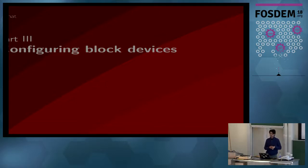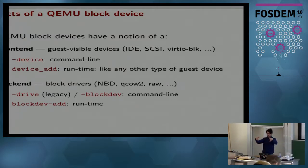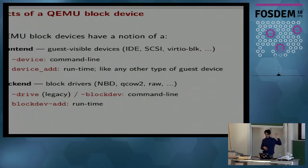In this part, we'll quickly see how block devices are configured in QEMU. QEMU's block device has a notion of a back-end and a front-end, where the back-end lets you configure a block device and set up various things like cache options, formats, and changing the backing file. There are two different ways to configure it: one is the legacy way, which LibVirt still uses, and the more recent changes are done via the dash-blockdev command line.